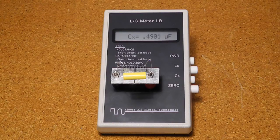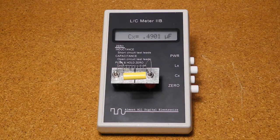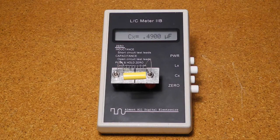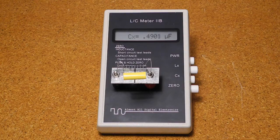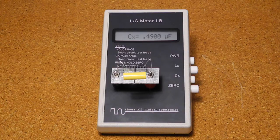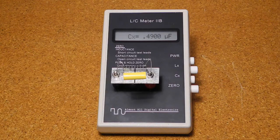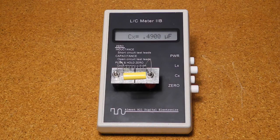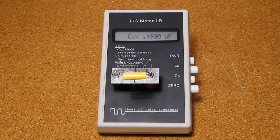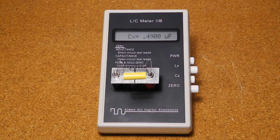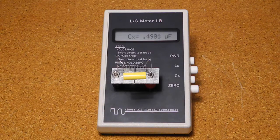Finally, for comparison purposes, I wanted to show a more modern state-of-the-art LC meter. This model is a kit from almost all digital electronics. It measures inductance and capacitance and directly displays the value on a digital display. As you can see, it's much smaller, easier to use, and accurate. But of course, this kind of technology was not available in the 1950s.